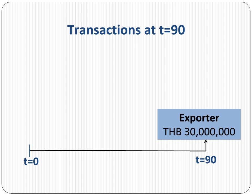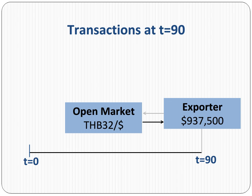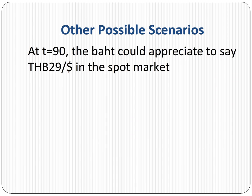The exporter receives the 30 million baht from the importer at t equals 90. The exporter converts the 30 million baht to dollars at the spot rate of 32 baht per dollar in the open market, receiving 937 thousand five hundred dollars. As a settlement from the bank, the exporter receives an additional 62 thousand five hundred dollars, since the baht depreciated.